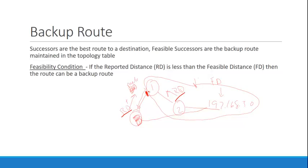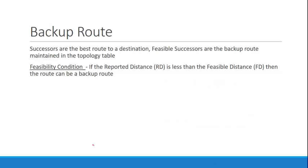We added this local piece, and that's where our feasible distance changed. The feasibility condition says the reported distance is less than the feasible distance. The best route is from R1 to R2 to reach the 192.168.3.0 network, but the backup route would be from R1 to R3. The reason EIGRP maintains a backup route is for faster convergence.